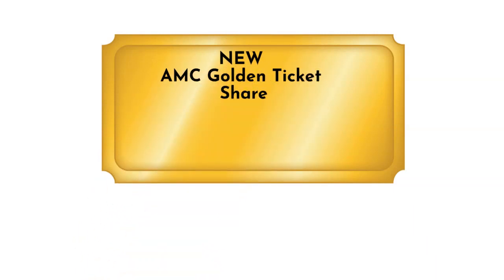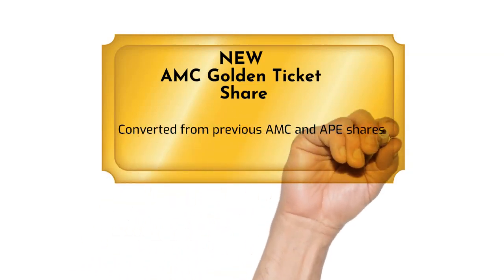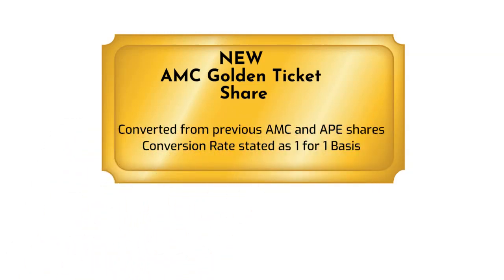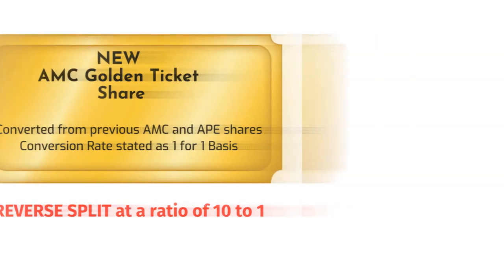The 8K clearly states the conversion rate is 1 share to 1 share, whether it is the old Ape or AMC shares being converted. Once these shares are converted to the new Golden Ticket version AMC shares, they will be reverse split at a 10 for 1 ratio. To be clear, this conversion and reverse split happen independently, but could technically happen in either order. Regardless, the same result will occur and each of our three investors will end up with two new Golden Ticket AMC shares.